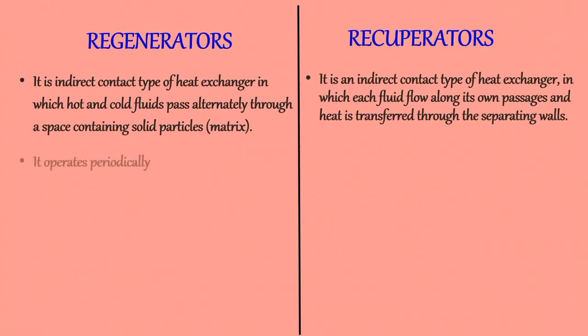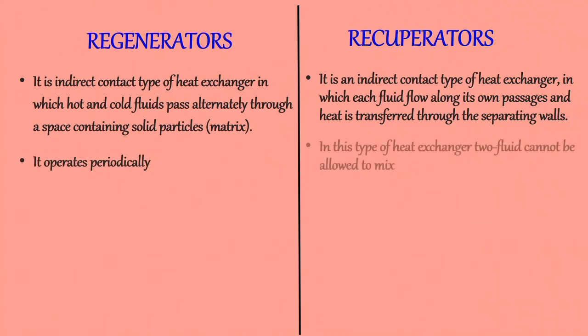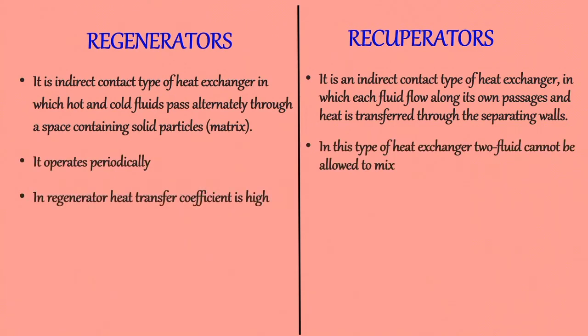A regenerator operates periodically because in this type of heat exchanger, the solid matrix alternately stores heat extracted from the hot fluid and then delivers it to the cold fluid. In a recuperator, the flowing fluids exchange heat on either side of the dividing wall, hence the two fluids cannot mix. The heat transfer coefficient in a regenerator is high, but in a recuperator the heat transfer coefficient is less.